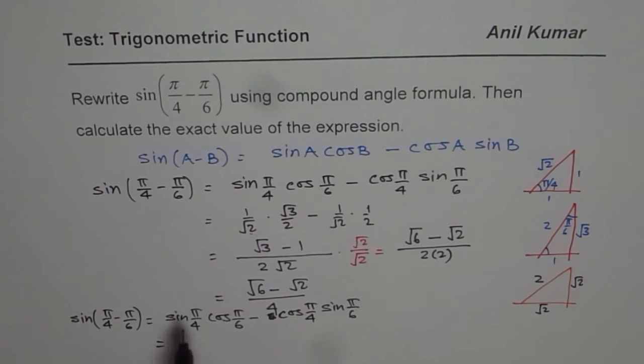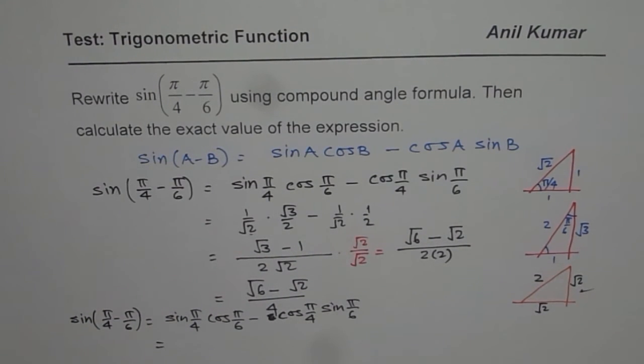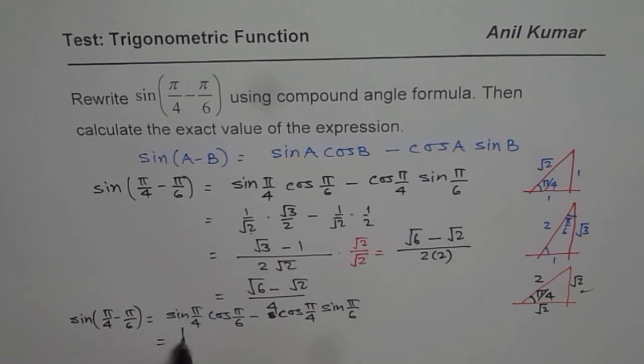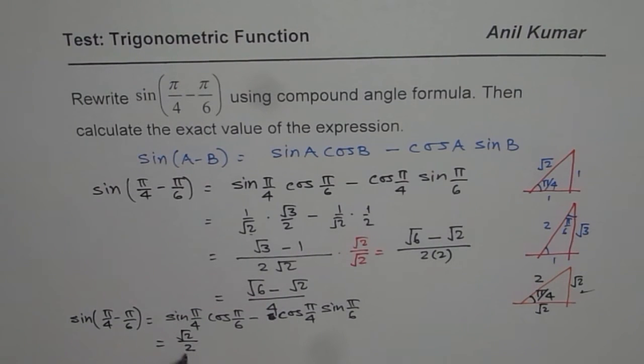So now in this case, I will use this particular triangle to substitute sin and cosine values for π/4. So sin(π/4) now would be written as √2 over 2. So it is √2 over 2, so no need to rationalize. That's the whole idea.